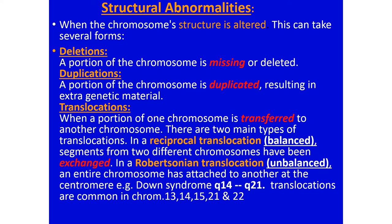Structural abnormalities occur when the chromosome structure is altered. This can take several forms: deletion — a portion of the chromosome is missing or deleted; duplication — a chromosome segment is duplicated, resulting in extra genetic material specific to that chromosome; and translocation — which may be of two types: reciprocal, also called balanced, and Robertsonian, also called unbalanced, where a portion of one chromosome is transferred to another.